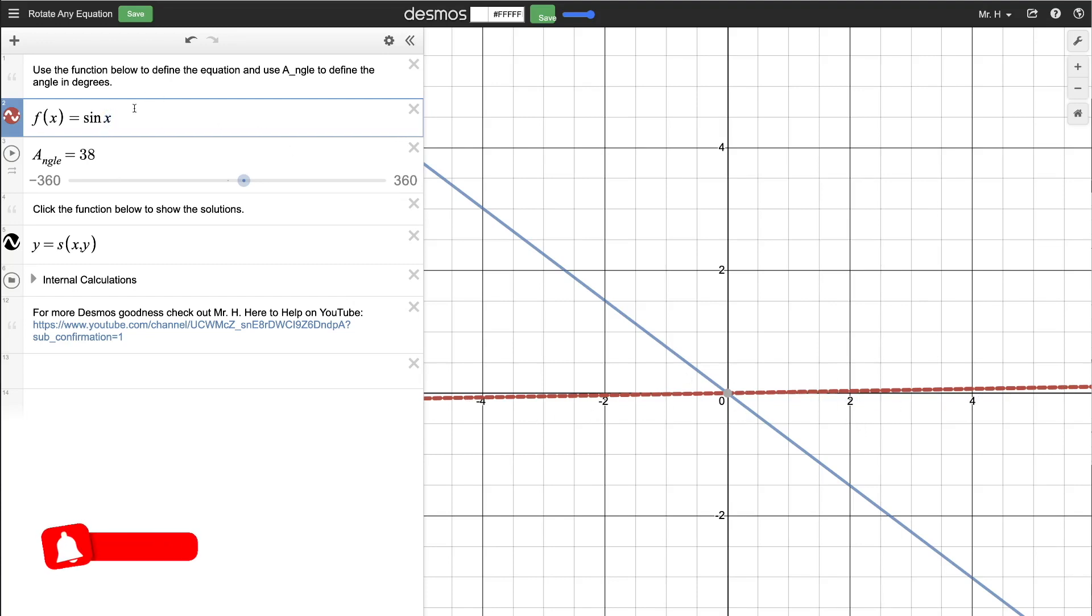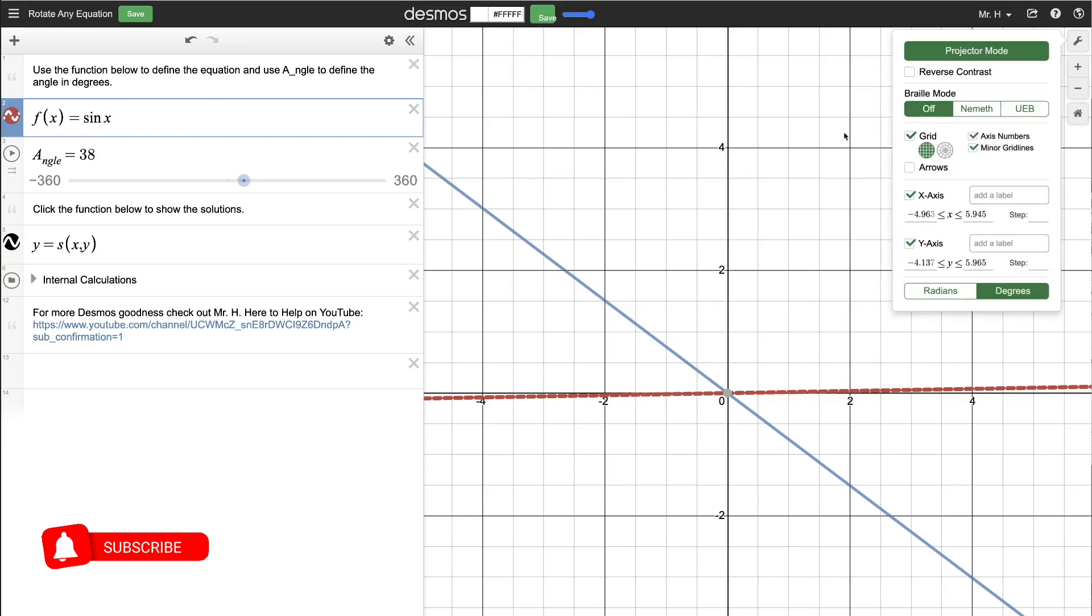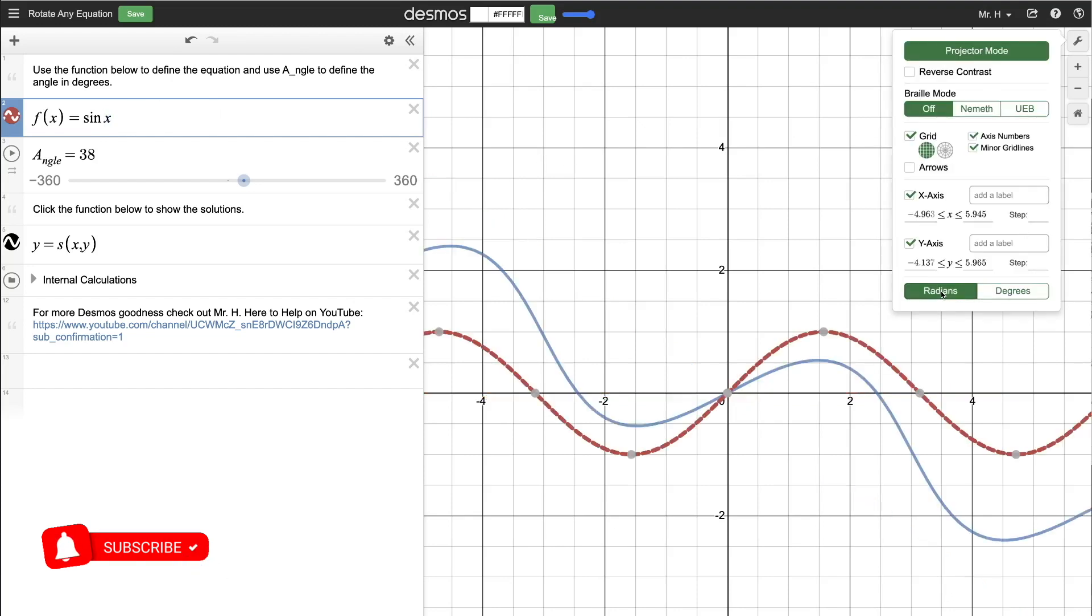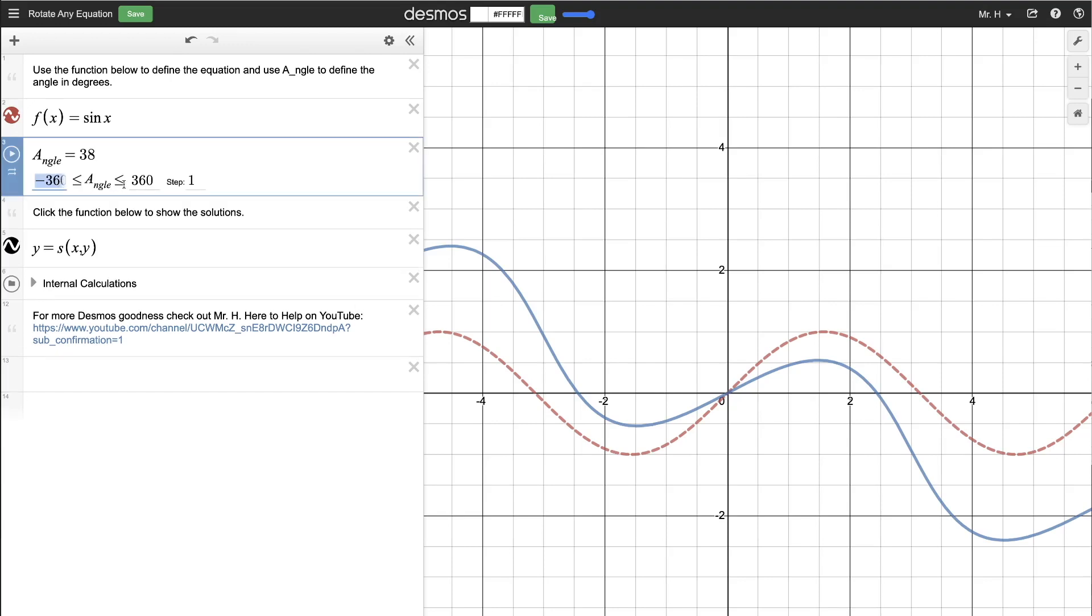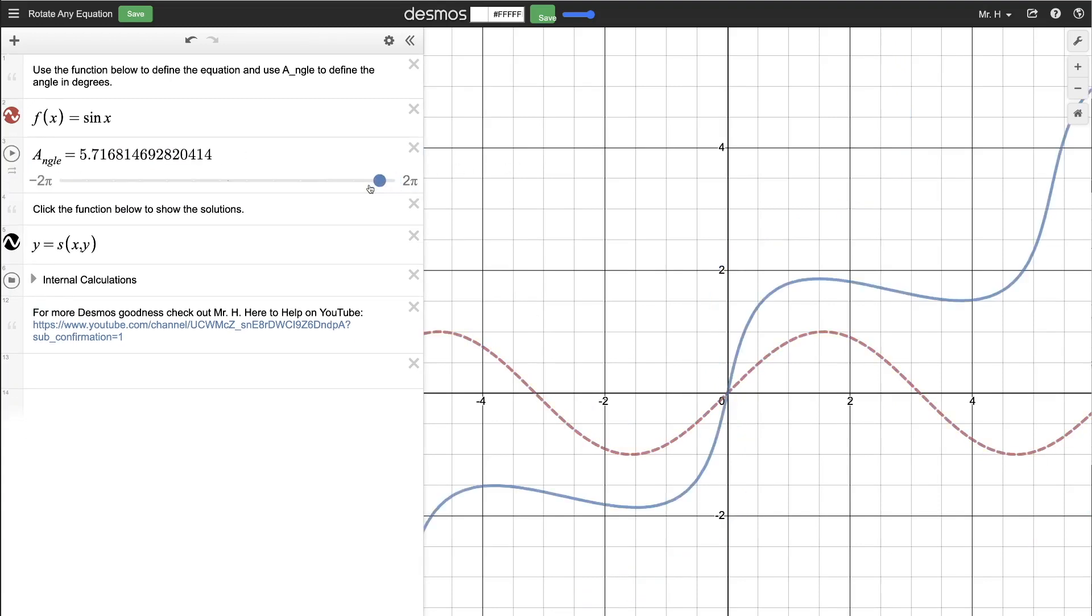So one way that you can work through this is just by going to the wrench up here in the corner and clicking on radians. And now our graph is going to be in radians. But notice we still have our angle in degrees. So I would want to change this to negative two pi up to positive two pi.